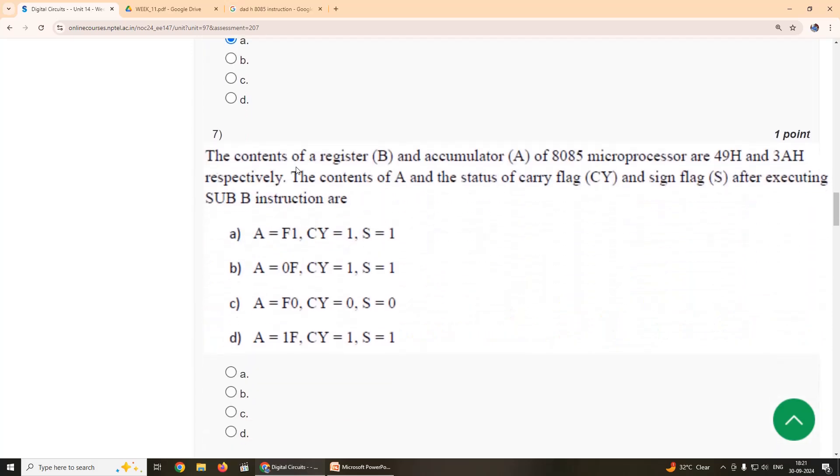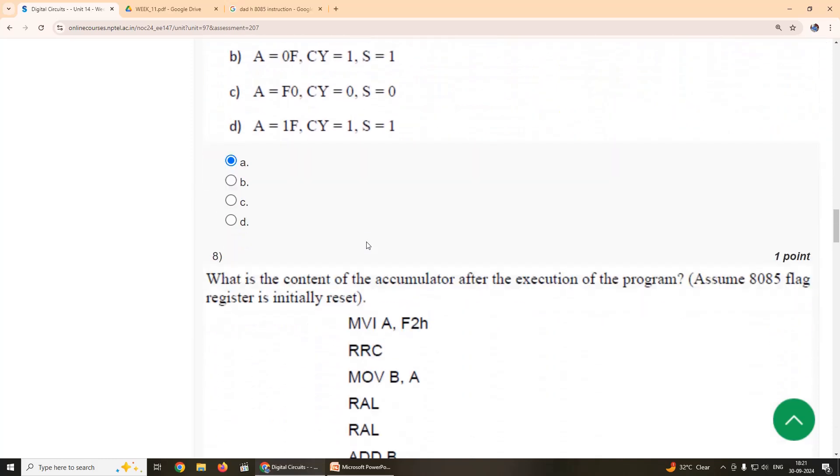Seventh one: The contents of register B and accumulator A of 8085 microprocessor are 49H and 3AH respectively. 49 is greater than 3A. So the contents of accumulator and the status of carry flag and sign flag after executing SUB instruction are. So the result after execution is F1. So answer for this is seventh A. Our suggestion is A, F1. Accumulator content is F1 with the carry flag because there is a borrow, and sign flag is also set because the number is negative.